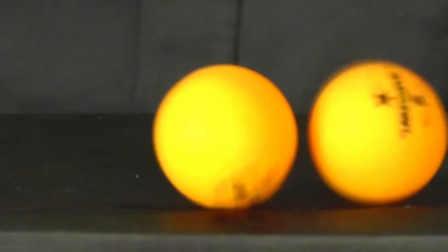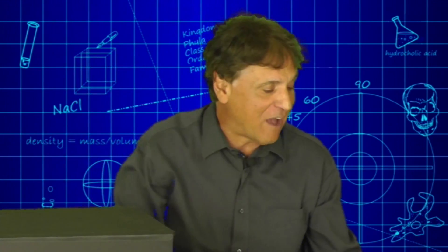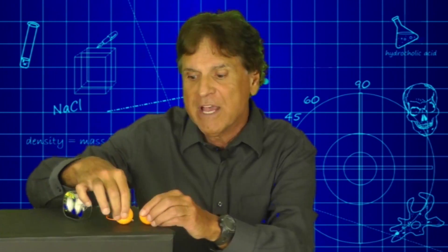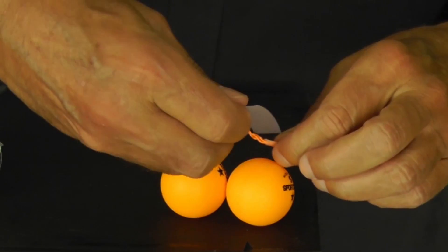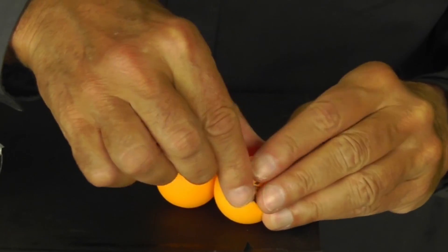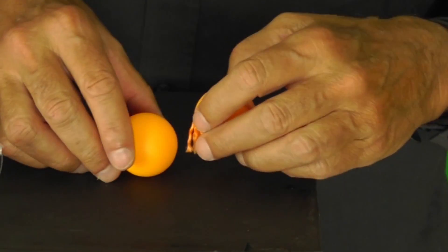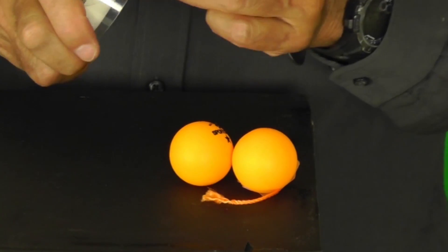Watch that again. Pretty much at the same time. But what happens if I were to double the mass of that ball? Would the balls travel at twice the speed? Well, one way to find out. What we're going to do now is build a system using these two table tennis balls. To build that system, we'll connect them together using that piece of string. So we'll take our tape and use it to connect one of the table tennis balls with the other one.